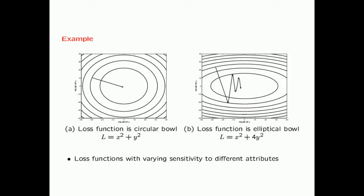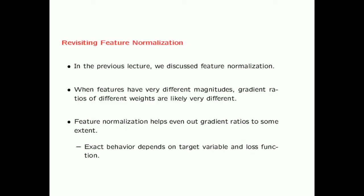In the case of the elliptical bowl, age will be like the y attribute and salary will be like the x attribute, and that will cause more bouncing. That is one of the reasons why you perform feature normalization — it helps even out the gradient ratios to some extent. Of course, the exact behavior depends on the nature of the target variable, but in the absence of any information about the target variable and its relationship to the feature variables, this seems like a reasonable thing to do.